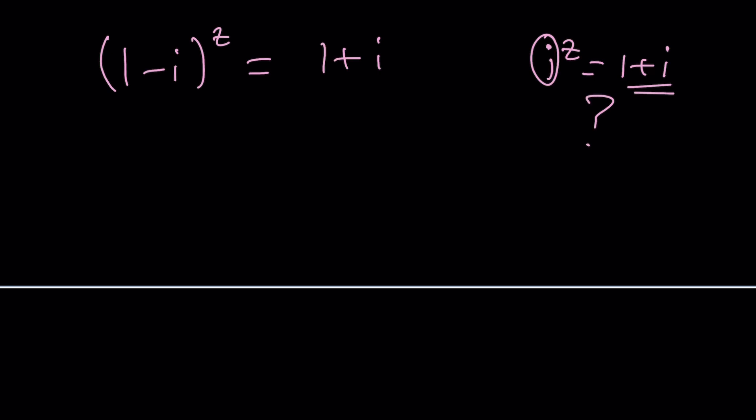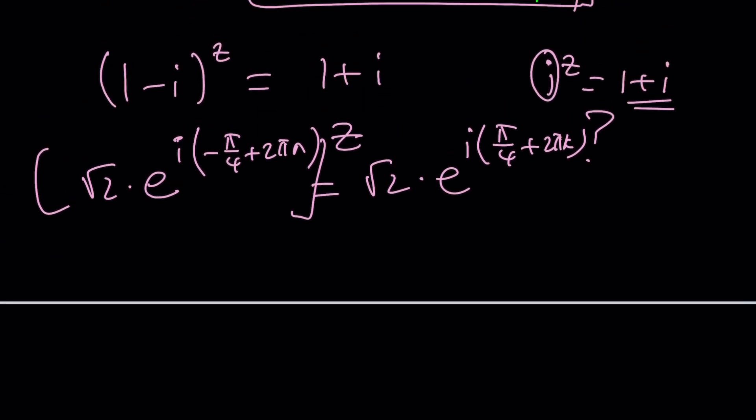So when I wrote this as root 2 times e to the power negative i pi over 4, and I think I'm supposed to write this as i times negative pi over 4 plus 2 pi n. And then on the other side, root 2 times e to the power i times pi over 4 plus 2 pi k. And here's the thing. We raise this to the power z, right? So when you raise it to the power z, looks like this is giving me z equals 1 only, right? Because if this is true, then does that mean z is equal to 1?